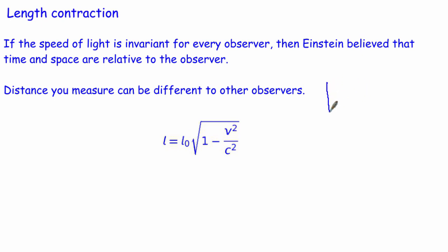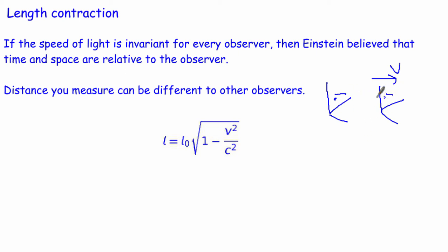We need to go back to the idea of inertial frames. We've got two inertial frames — one is moving at speed relative to the other. We're sat in one and we can watch the other go by at a constant speed. If we measure a certain distance in one frame, the same object will potentially look different in the other frame. So if we've got a one-metre ruler in that frame — one metre in its own rest frame — we would measure it to be something different, and actually we'd measure it to be less than one metre.